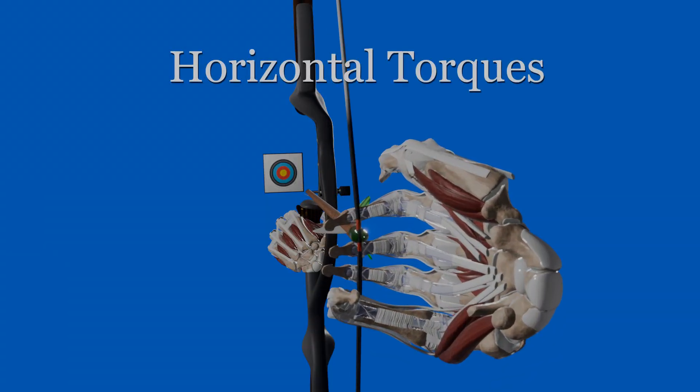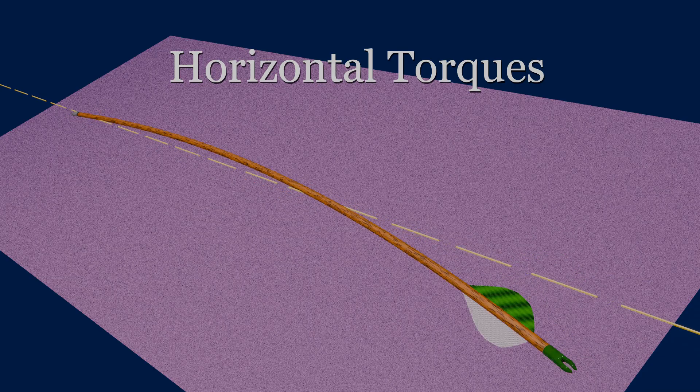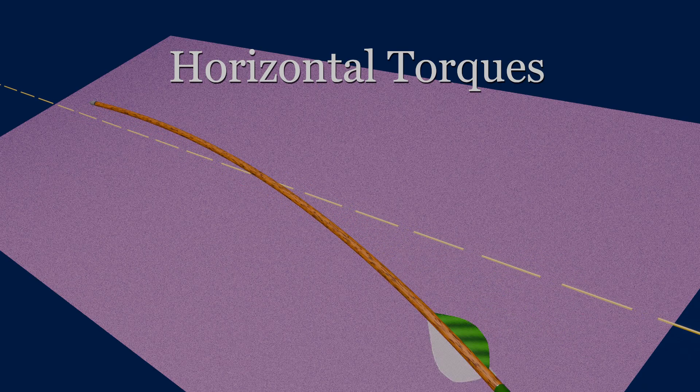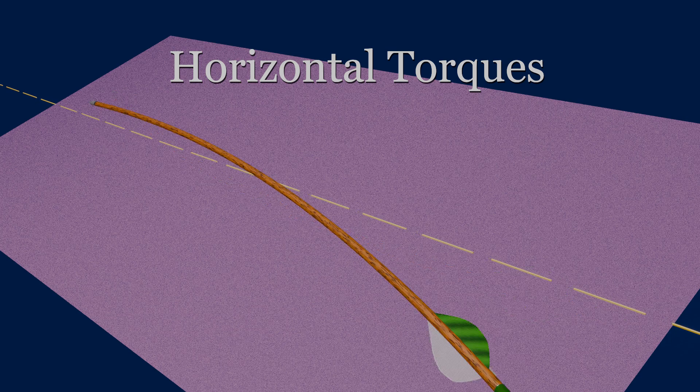The arrow's interactions with the string, as well as the initial lateral displacement and reactive forces of the plunger, produce torque forces in the horizontal plane. These are seen as fishtailing as the arrow leaves the bow. These may be more to the right or more to the left based upon the dynamic spine of the arrow. In our example, this is more to the right.